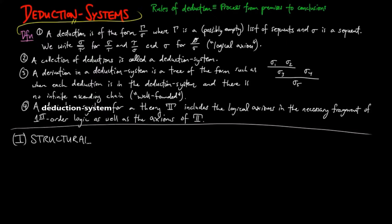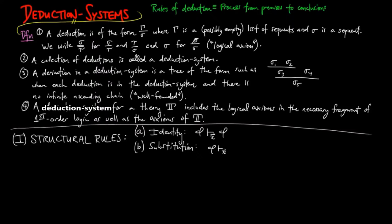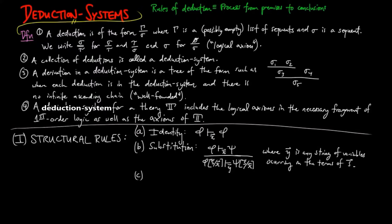The first category is structural rules. A: we have the identity axiom, where phi entails phi in a context x. B: substitution — if phi entails psi in the context of x, then phi with s substituted for x entails psi with s substituted for x in the context of y, where y is any string of variables containing the variables in the terms of s. C: the cut rule — if phi entails psi in the context of x, and psi entails chi in the context of x, then phi entails chi in the context of x.